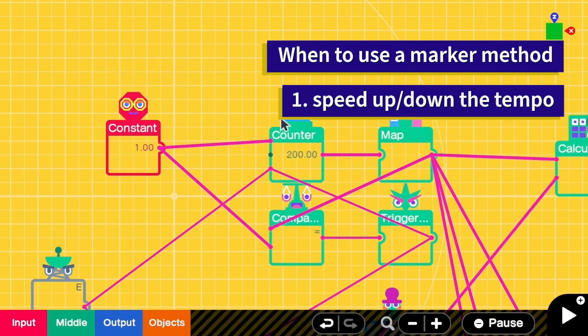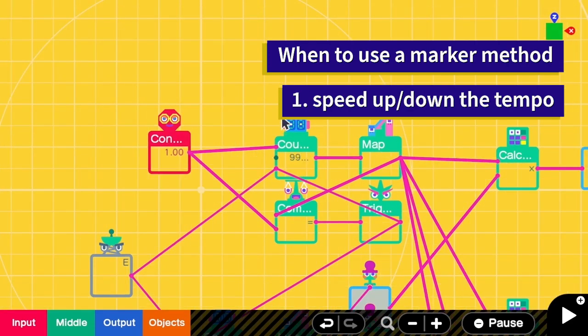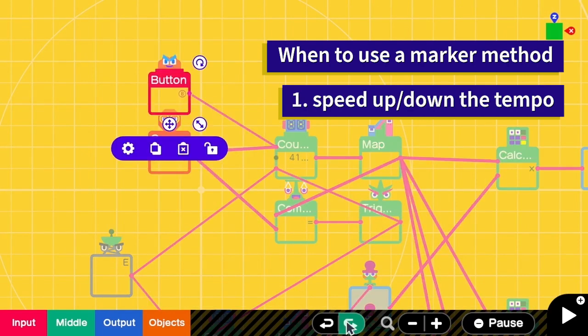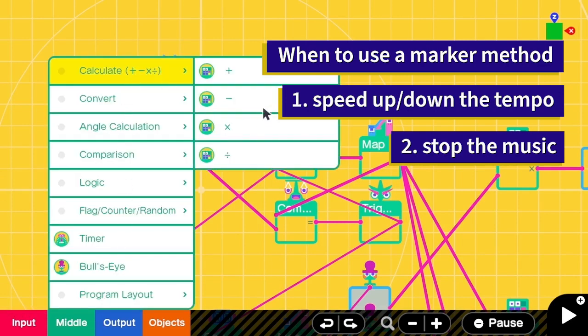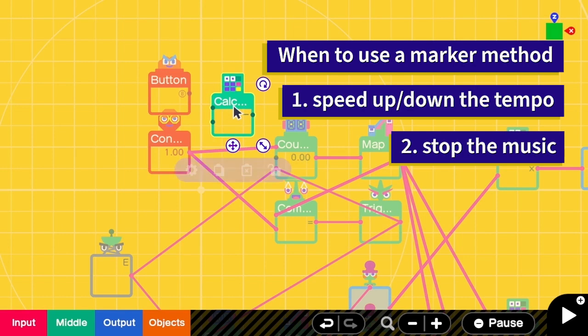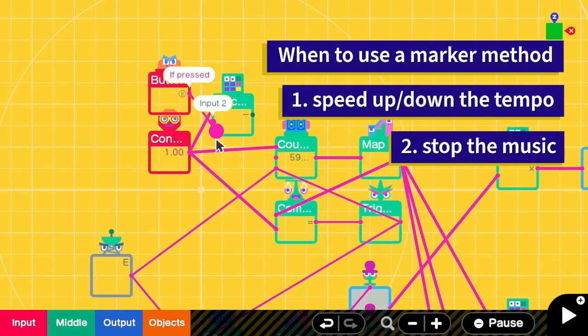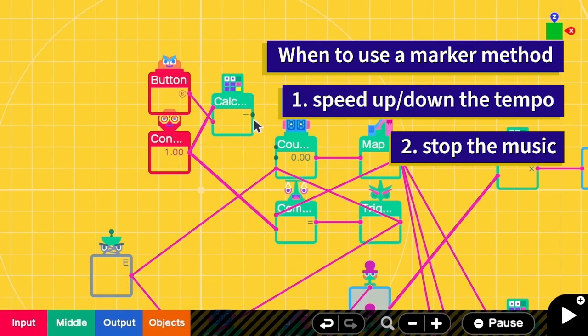Another use case that the marker nodon method is more useful is when we want to be able to stop the music. For example, I want to stop the music when B is pressed. I can add minus. And then 1 minus B. So now when B is pressed, this will output 1. And the calculator here will give 0.